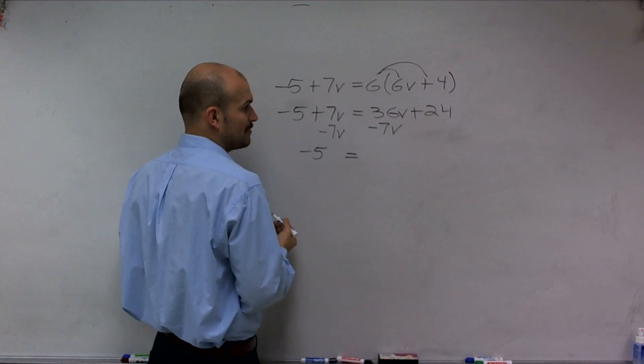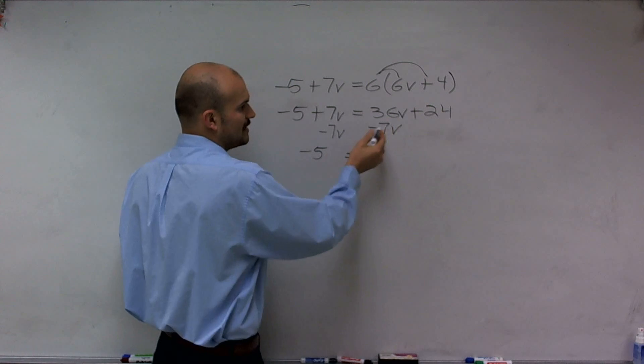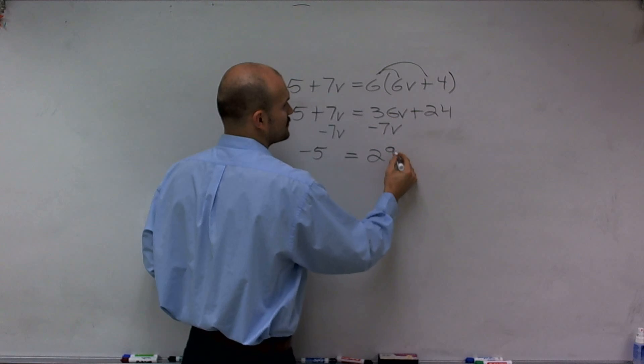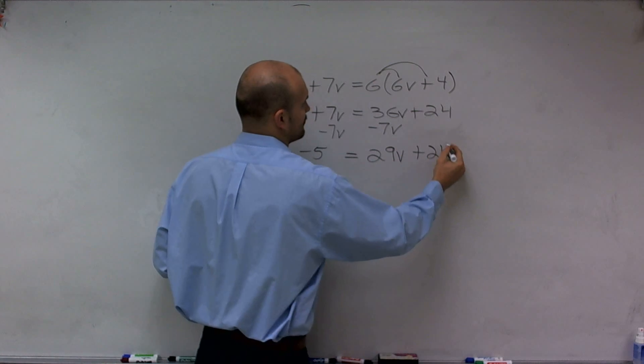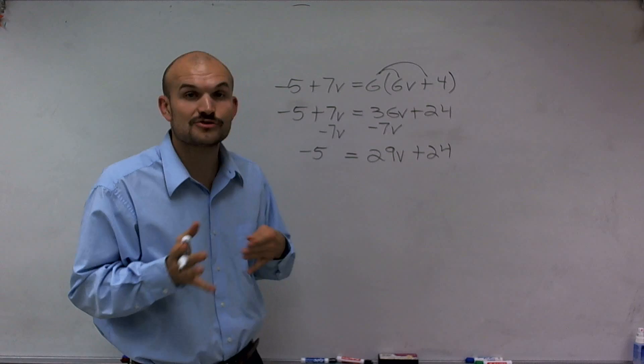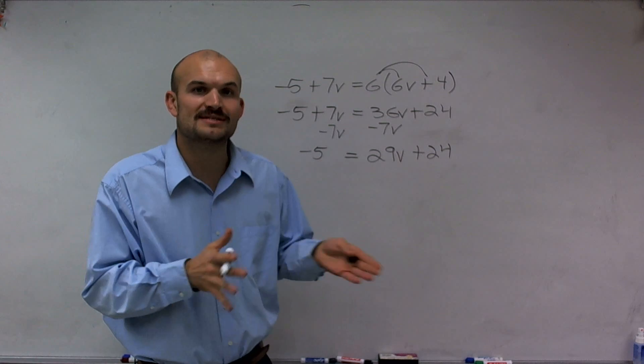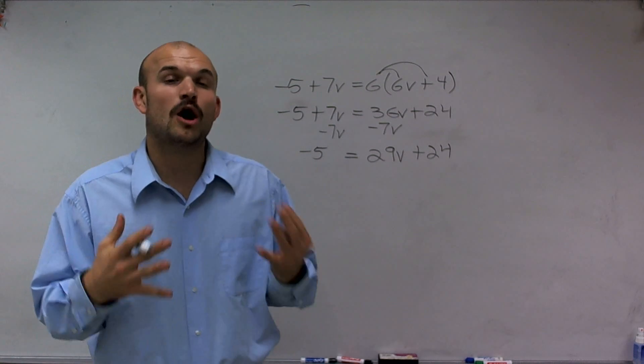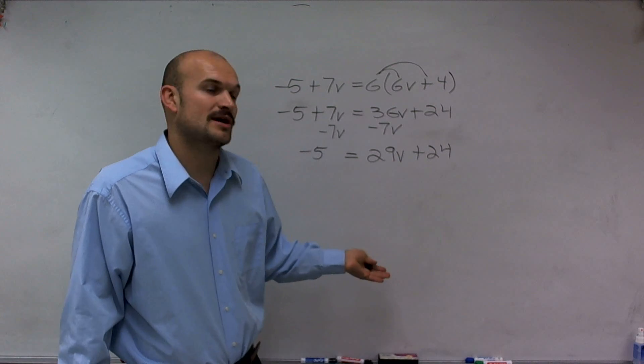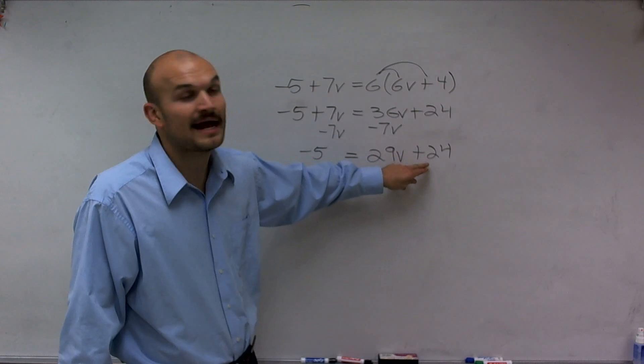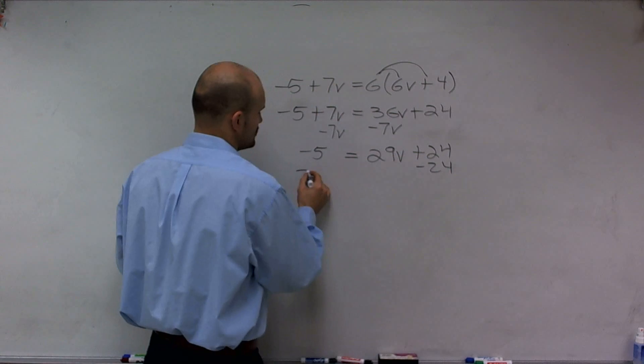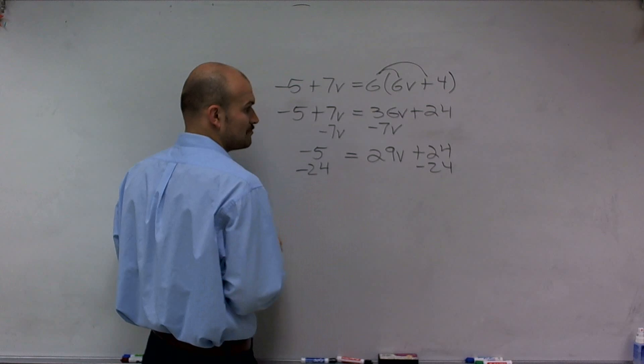And again, I'm using subtraction property of equality. 36v minus 7v is going to be now a positive 29v plus 24. So now, to isolate my variable, what I need to do is use my inverse operations. Undo what's happening to the variable. The first thing you always want to undo is what your variable is being added or subtracted by. So I notice my v is being added by 24. So I'm going to subtract 24 on both sides using the subtraction property of equality.